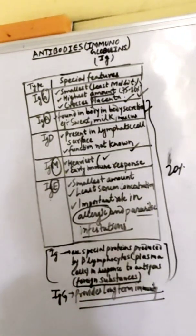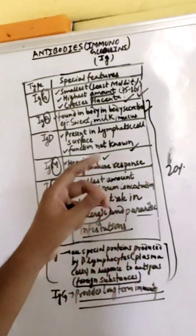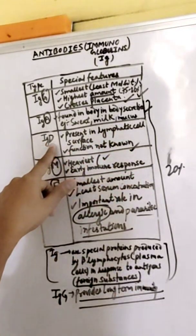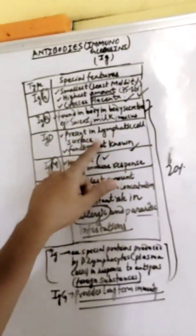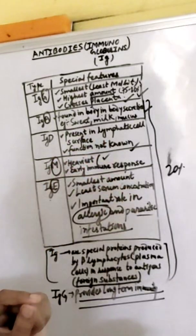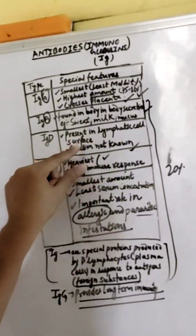IgD is present in lymphatic cell surface, but its function is not known.